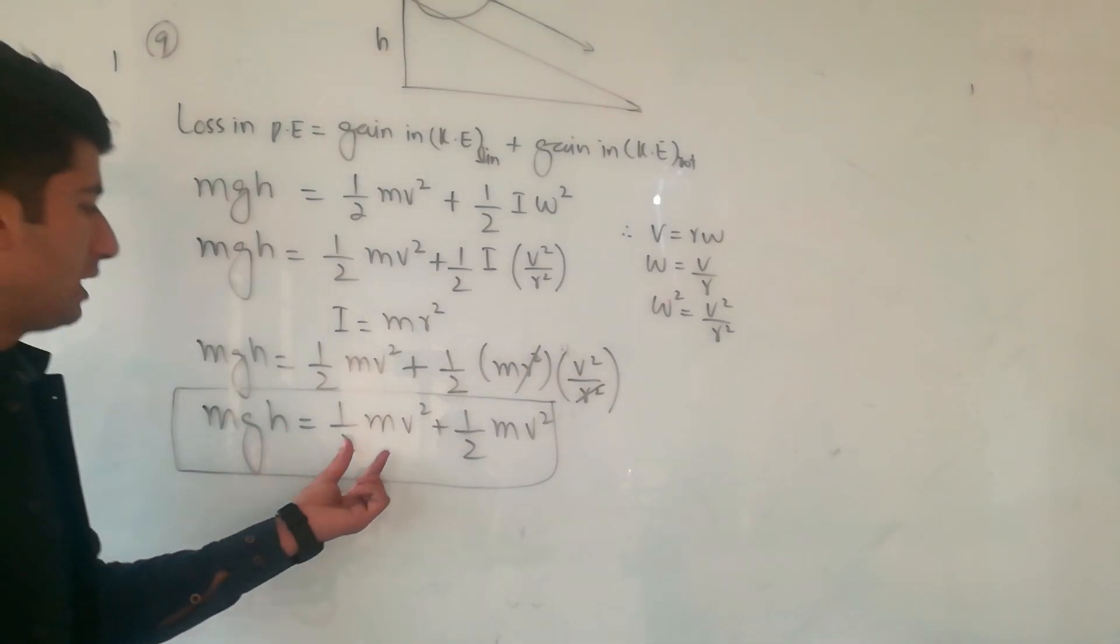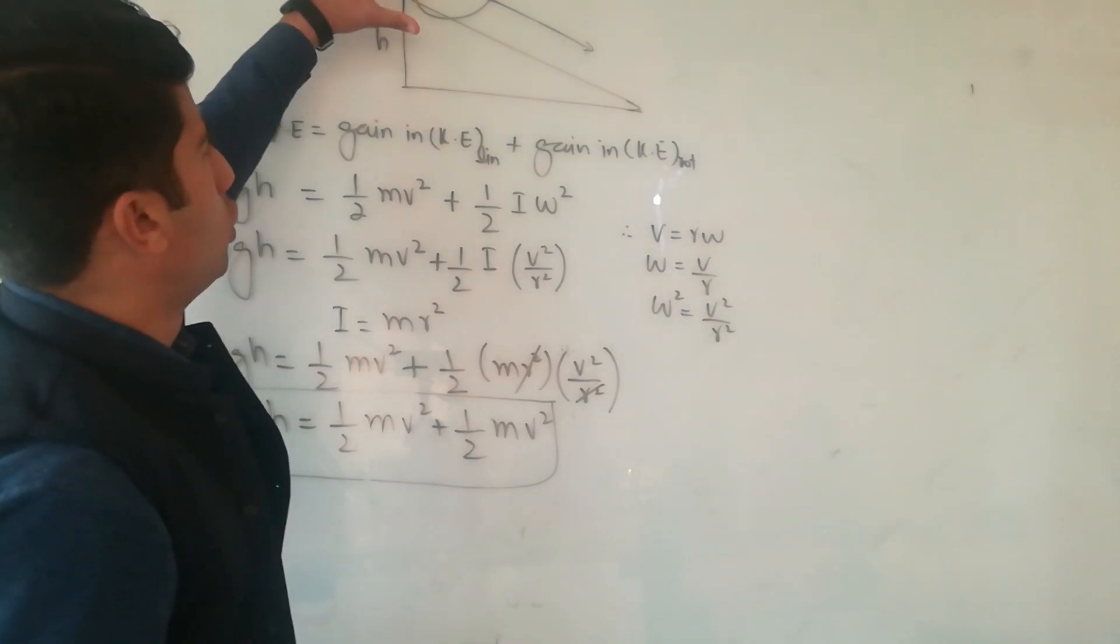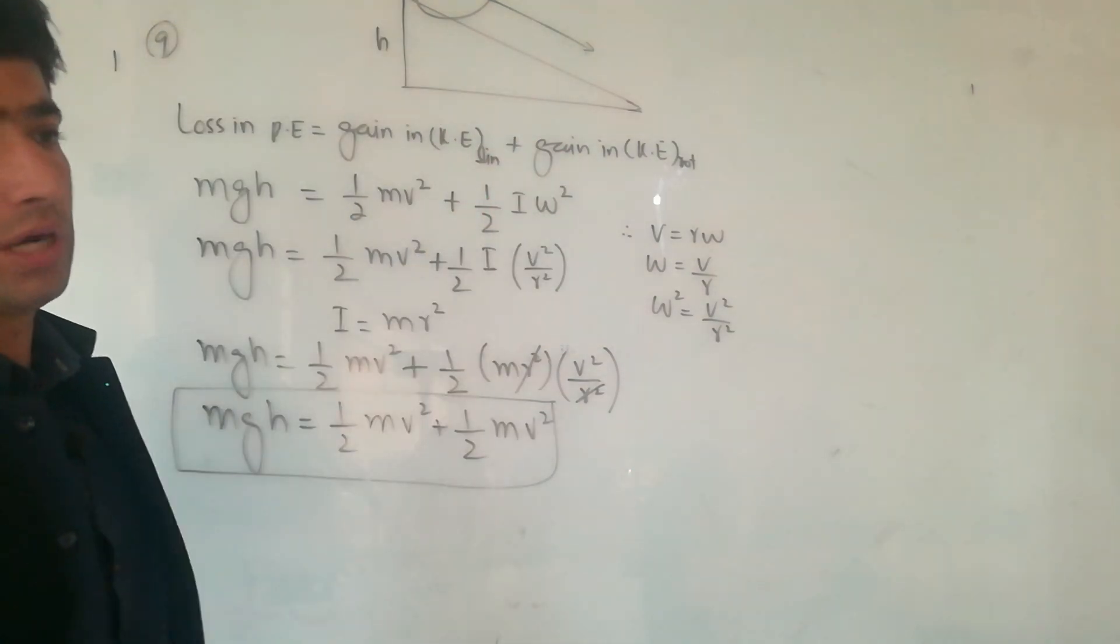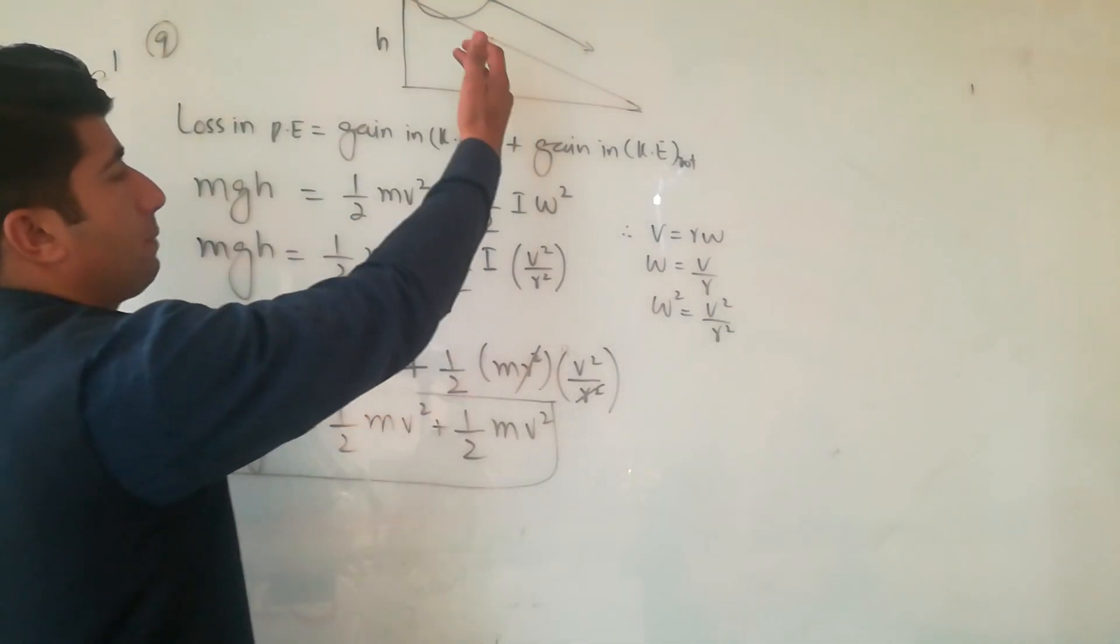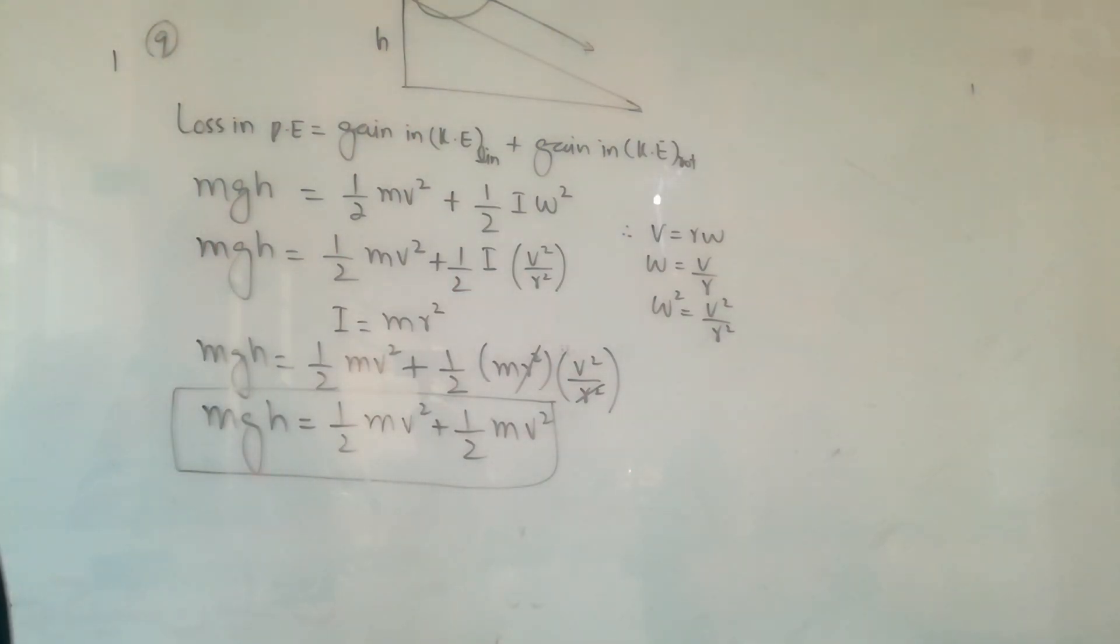For a hoop rolling down the inclined plane, the kinetic energy has two parts: linear kinetic energy and rotational kinetic energy, or angular kinetic energy.